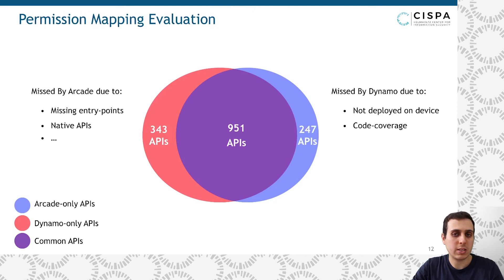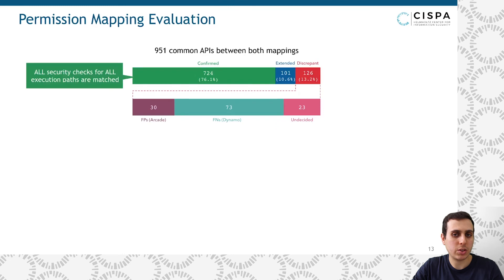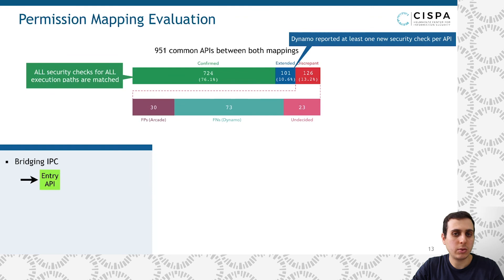Next, we take a look at the common APIs between both mappings, which are most interesting to us. Out of 951 common APIs, we automatically matched about 76% of them, and therefore we consider them confirmed given that Dynamo's results are sound. We also found that Dynamo extended the permission mappings for about 100 APIs, and there are two reasons for that.